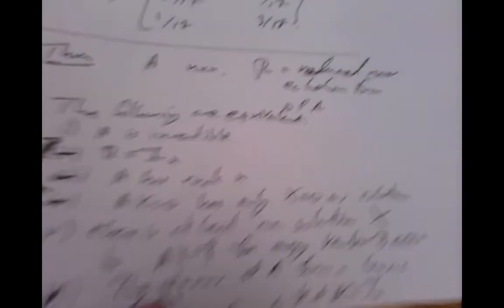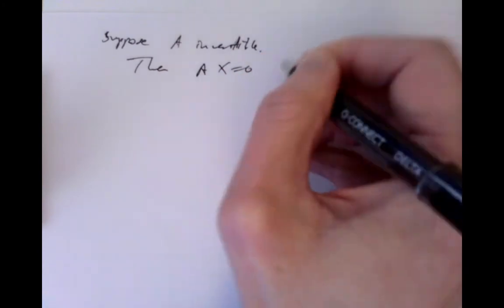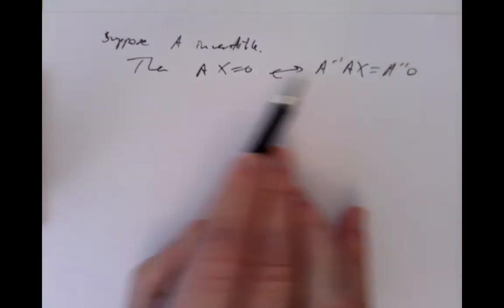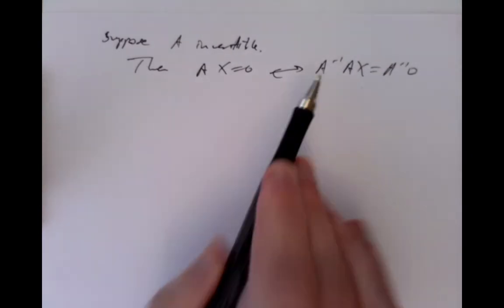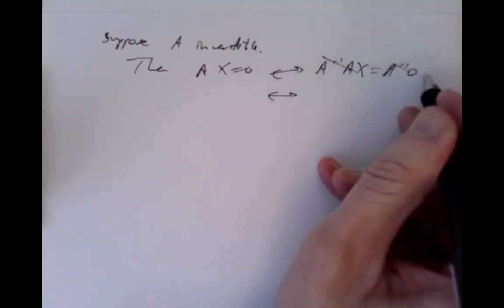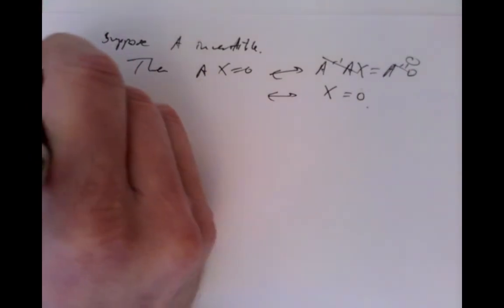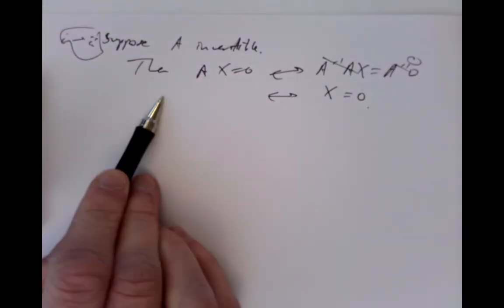Let's go through the proof. Suppose A is invertible. We want to prove that Ax = 0 has only the solution x = 0. If A is invertible, Ax = 0 is equivalent to A inverse times Ax = A inverse times 0, and the A inverse and A cancel, leaving x = 0. So 1 implies 2.